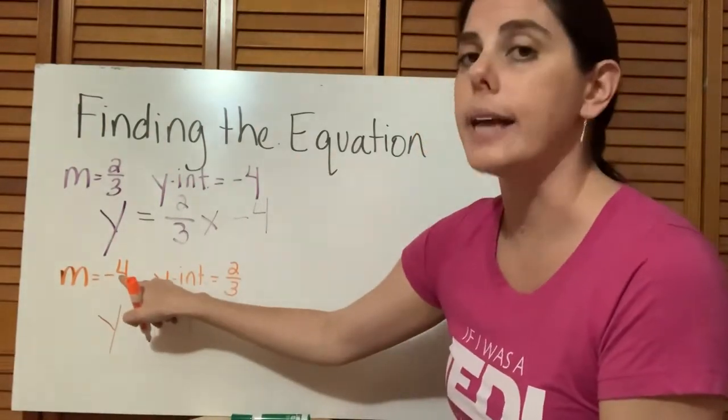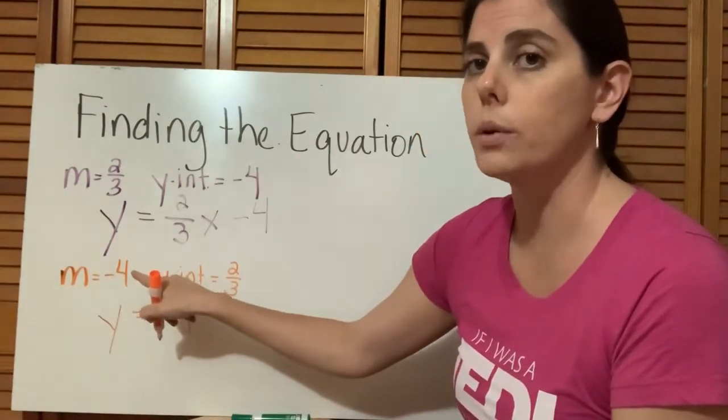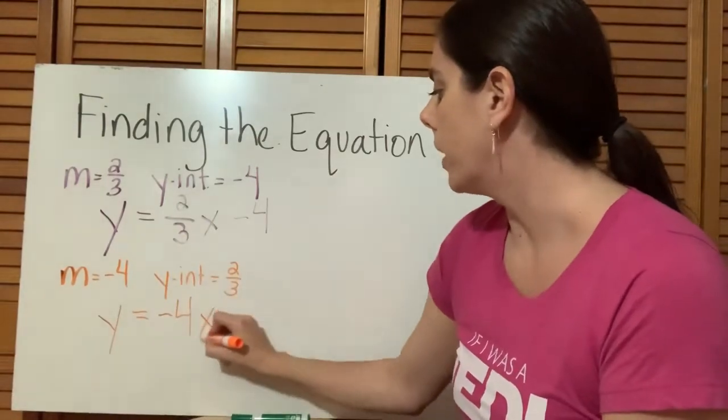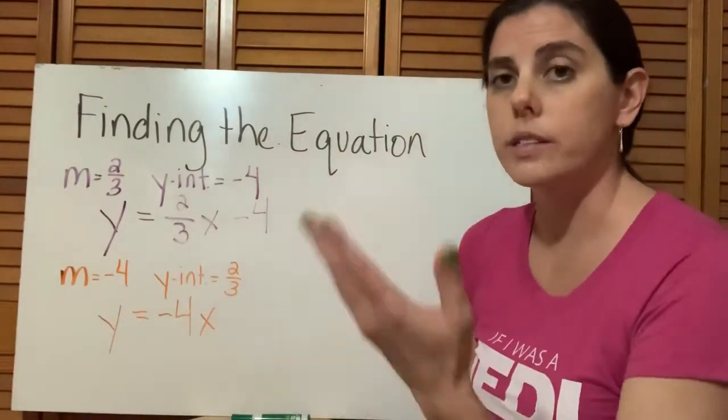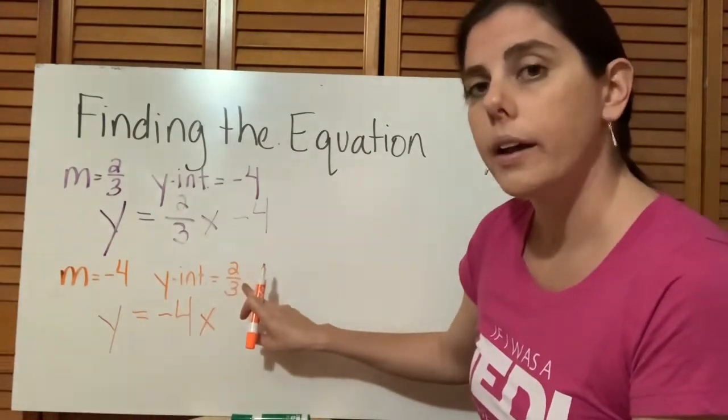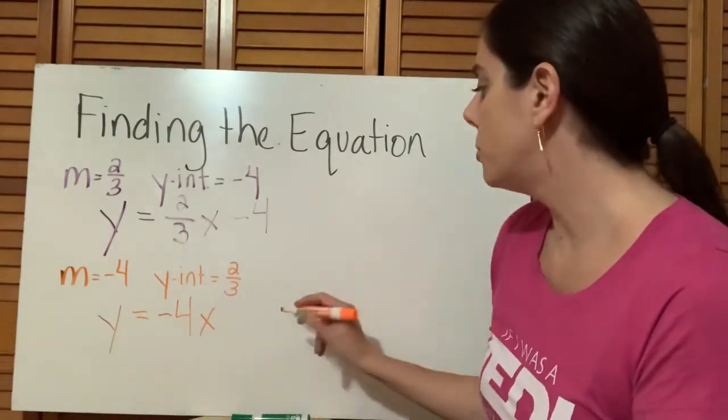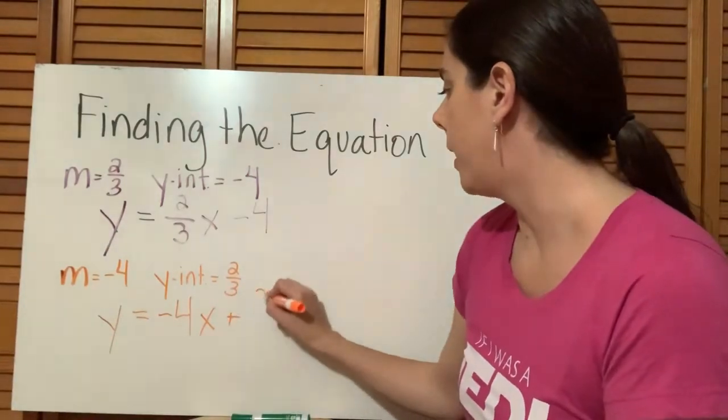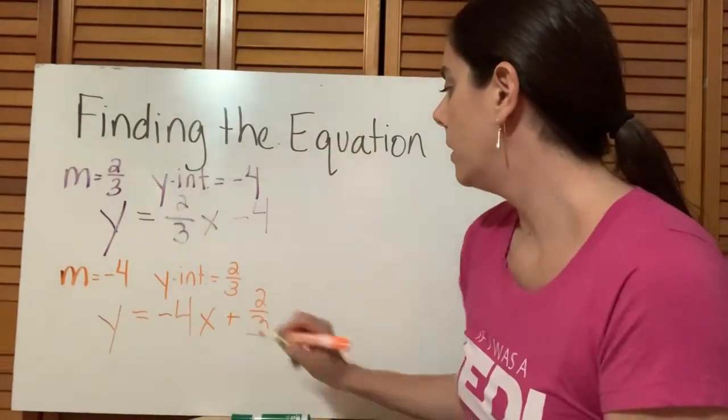And remember, it's mx. So y equals mx. So we've got to put our x value, our x variable, with that coefficient, with that slope. And then what is our y-intercept? A positive two thirds. So positive two thirds.